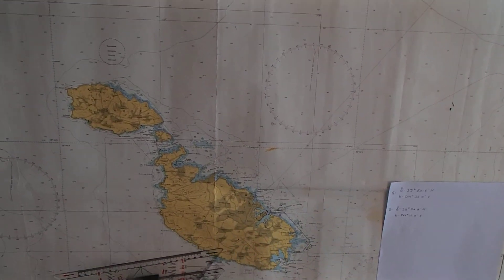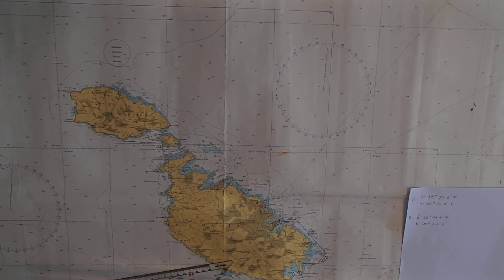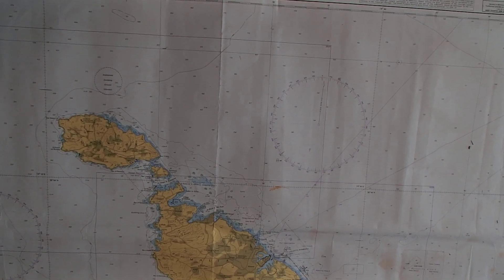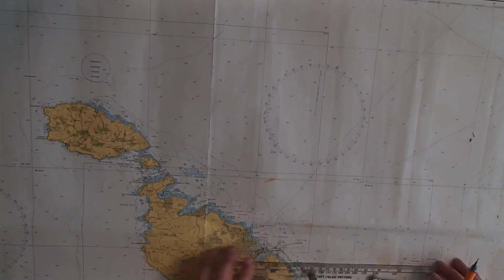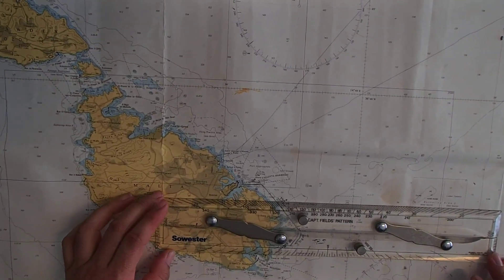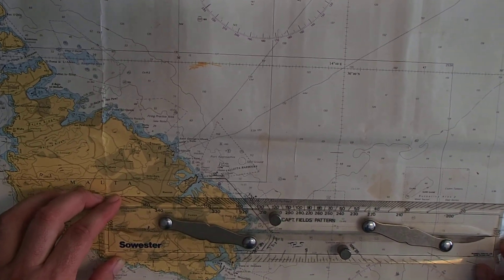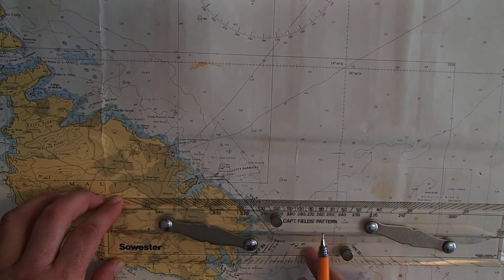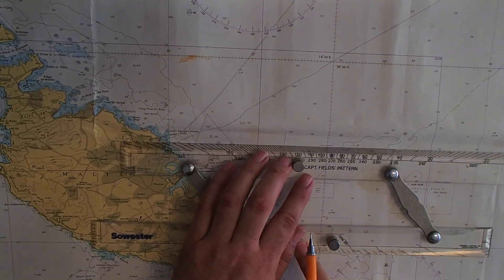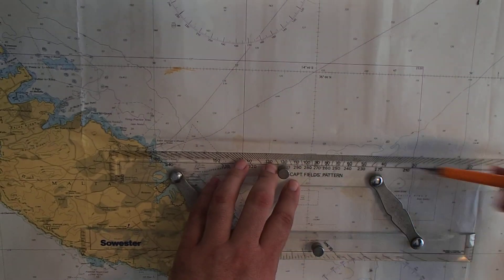So for the first example we have a position and we'll be doing the position using our parallel rulers. So we have a position at 35 55.6. With the parallel rulers in line with one of the latitude lines we are going up to 35 55 2 4 6, that's our line of latitude.